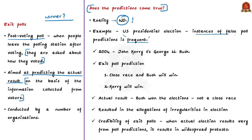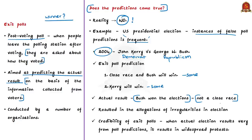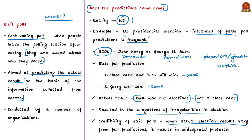In the 2004 US election, Democrat John Kerry was running against Republican George W. Bush. Some pollsters predicted a close contest with Bush likely winning, while other pollsters predicted victory for John Kerry. But in the end, George Bush won and it was not a close race. This resulted in allegations of irregularities such as possible ghost voters, phantom voters, or uncounted votes — because exit polls were considered credible enough that when actual results varied from predictions, it led to widespread protests claiming vote rigging.